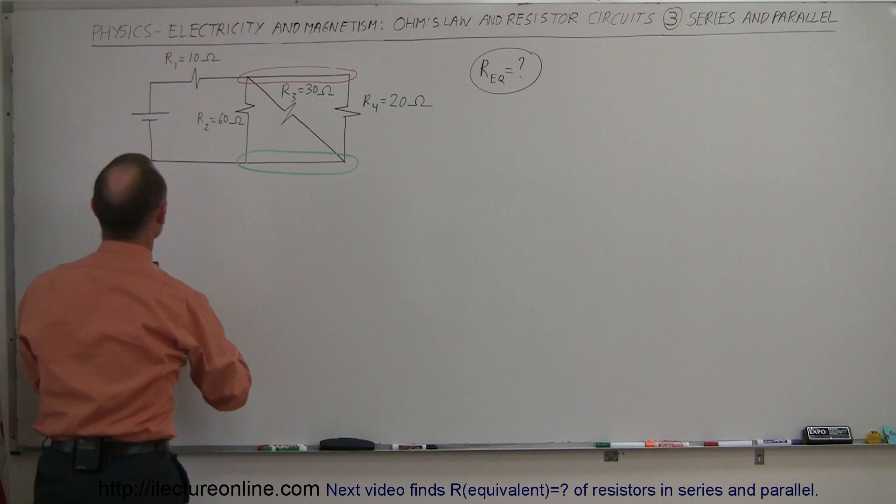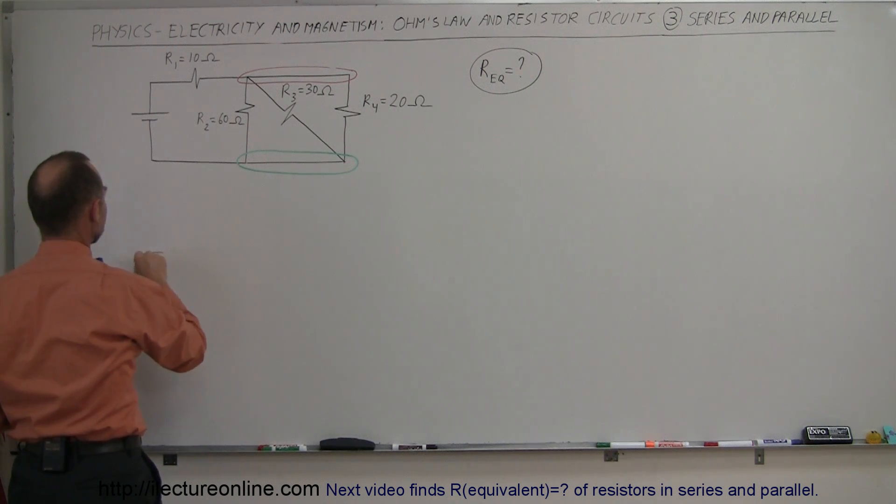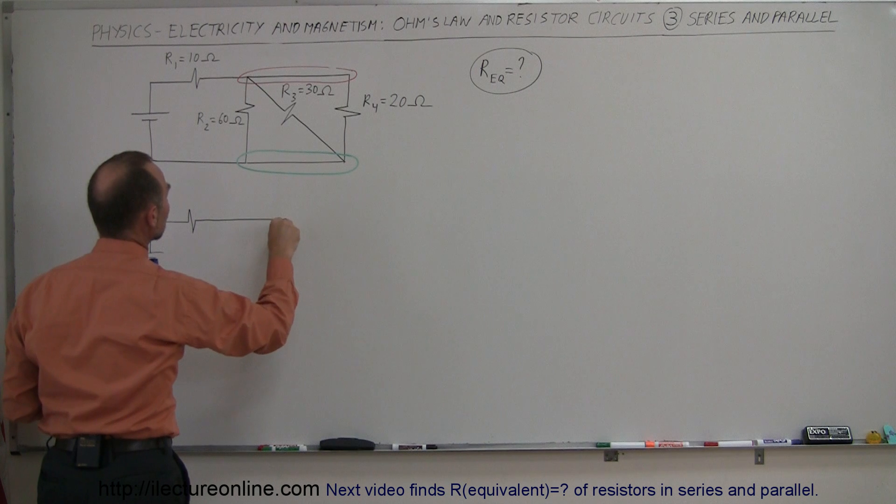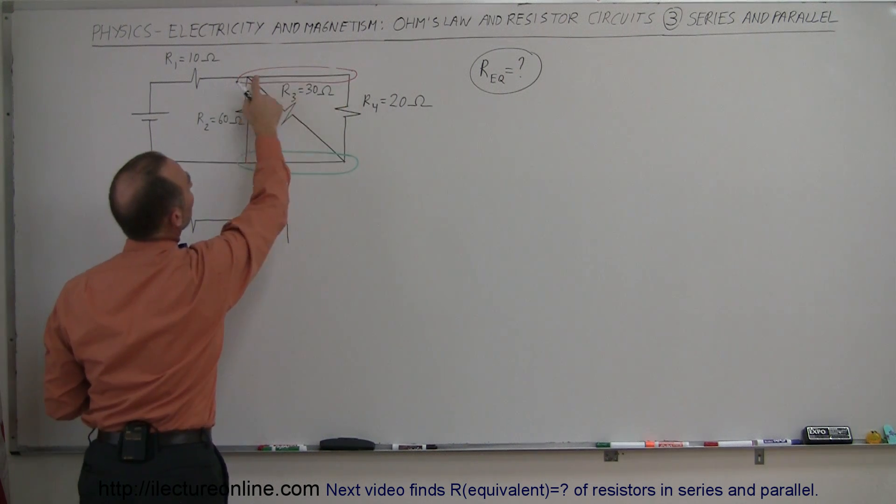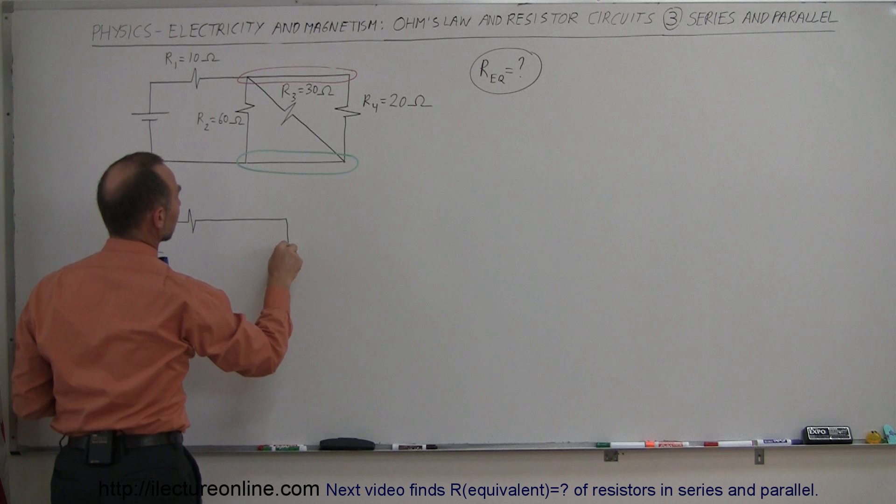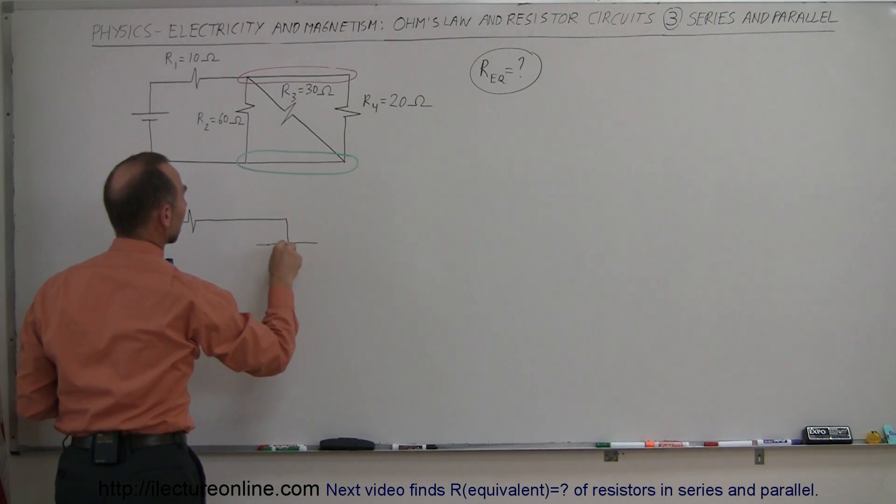We still have our battery. We have the resistor up there. Now what I'm going to do is draw a single junction that represents all three points right there. So like this, like this, and like that.